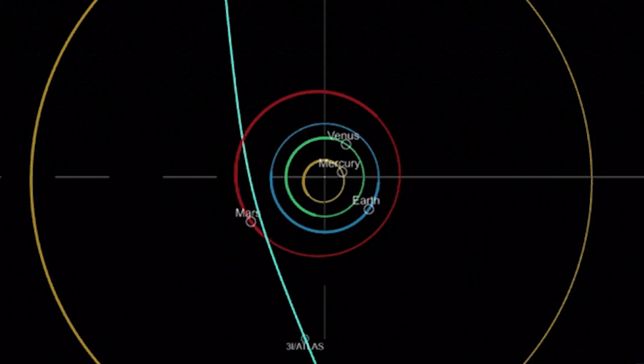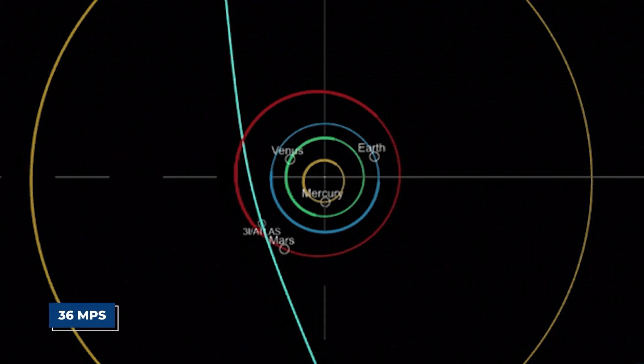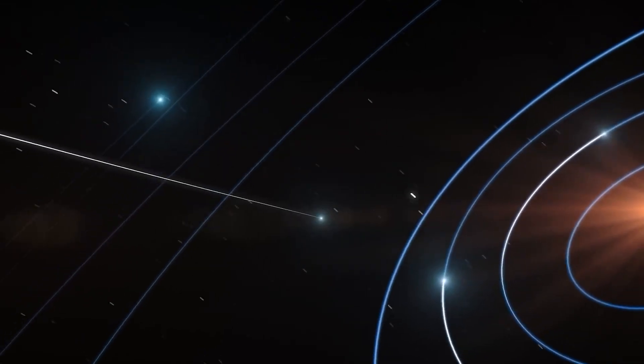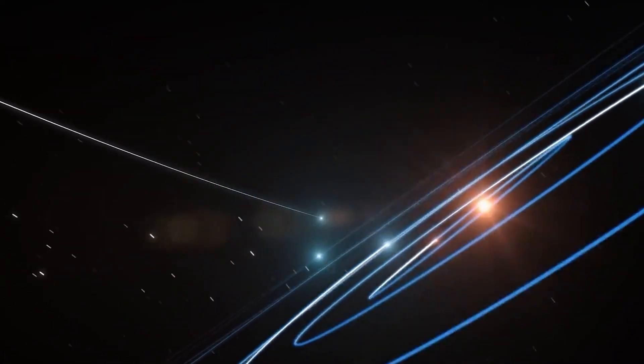What many overlooked at first was its sheer, breathtaking speed. This comet was hurtling through space at roughly 36 miles per second, an astonishing 130,000 miles per hour relative to the Sun.